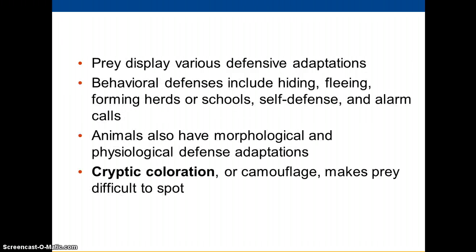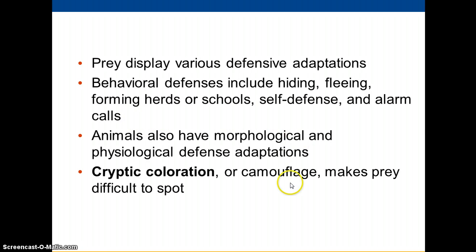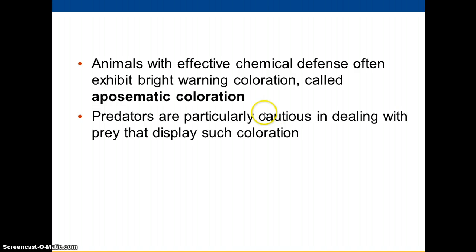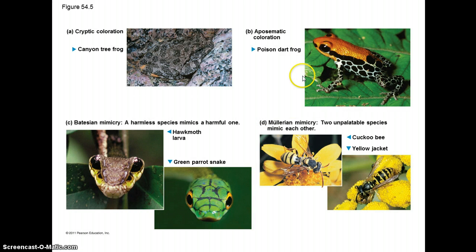Prey species are not helpless in this interaction. They have ways of avoiding predation: hiding, running fast, living in groups, or having defensive mechanisms — like a porcupine with its spines, or a turtle with its shell. There are also various other ways to avoid predation. Cryptic coloration or camouflage comes in handy — you blend in and hope you're not seen. Then there's what's called aposematic coloration, where you really stand out. Poison arrow frogs are a good example — they're advertising that they're not very tasty.